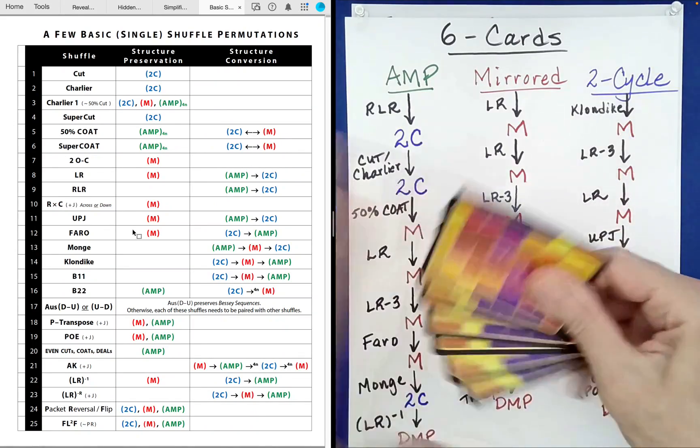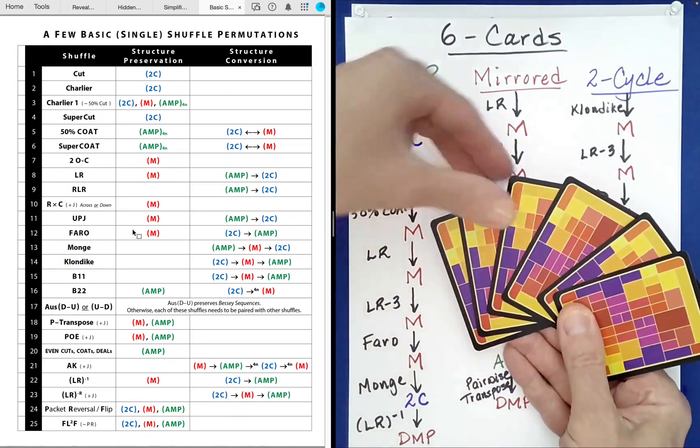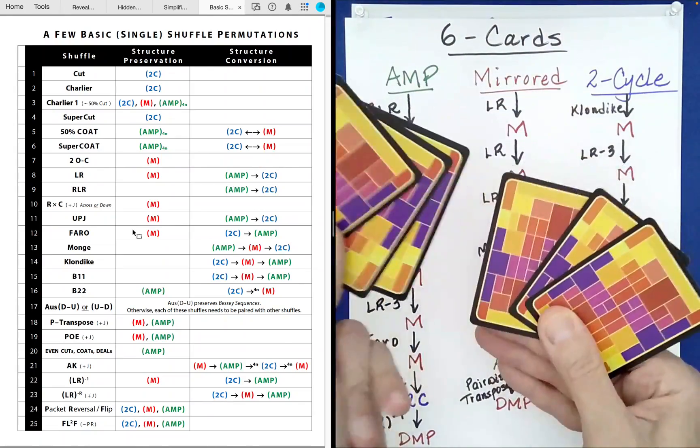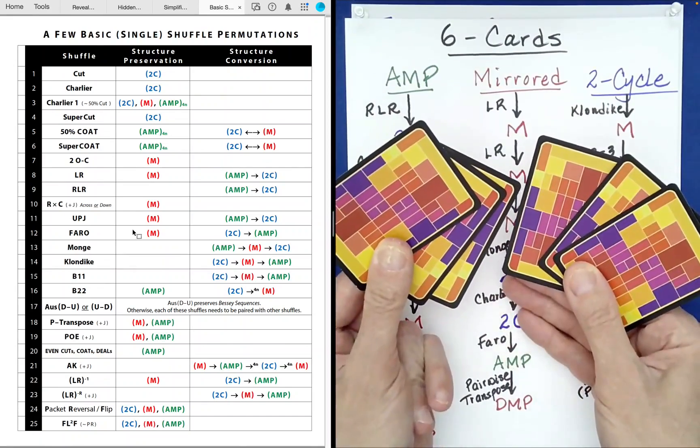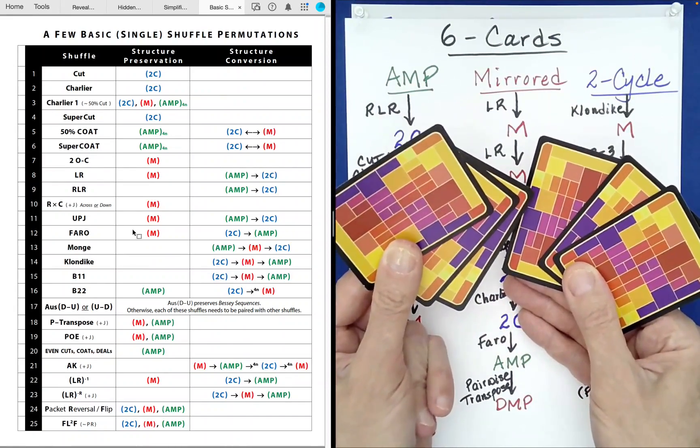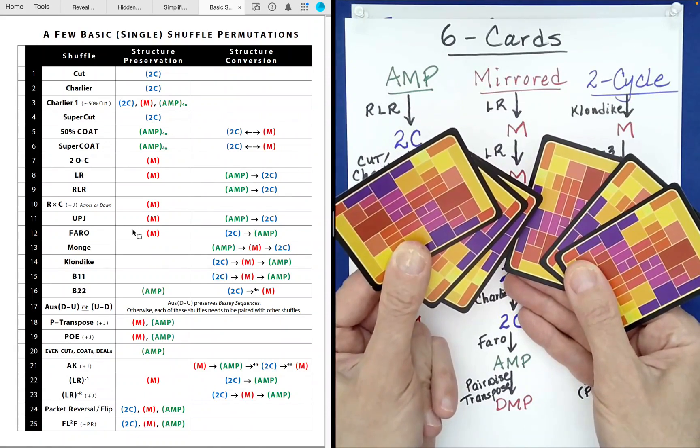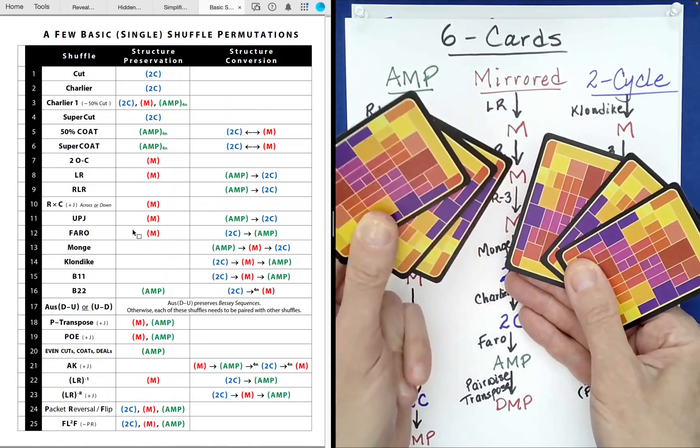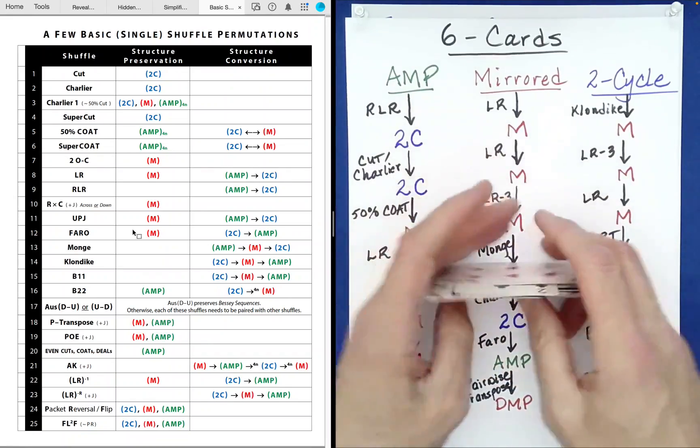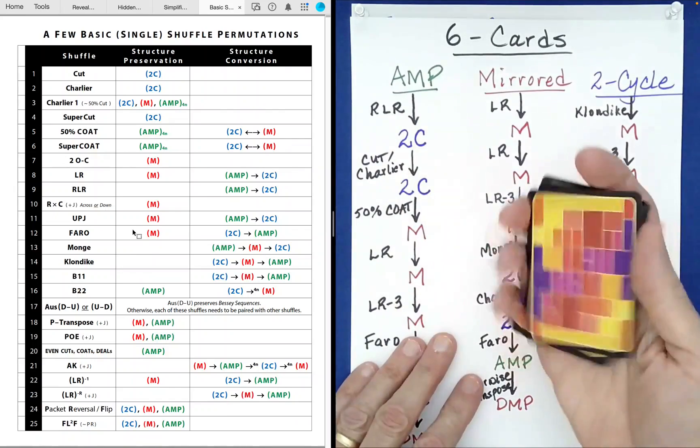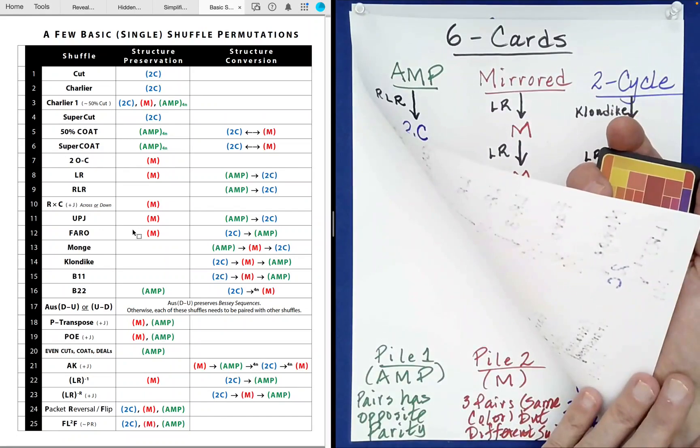So how the faro shuffle works is you have the cards and you split them exactly in half. So I'll take the bottom half here. And then you just perfectly interlace them. Now depending on how you interlace them, one is technically a faro in and the other one's a faro out. Well, guess what? Both of those preserve mirrored structures. So it actually doesn't matter. So I'll go ahead and perfectly interlace these. Okay? There you go. So that's a faro shuffle. And so this is still mirrored relative to the special characteristics that we made note of, right? For pile one.